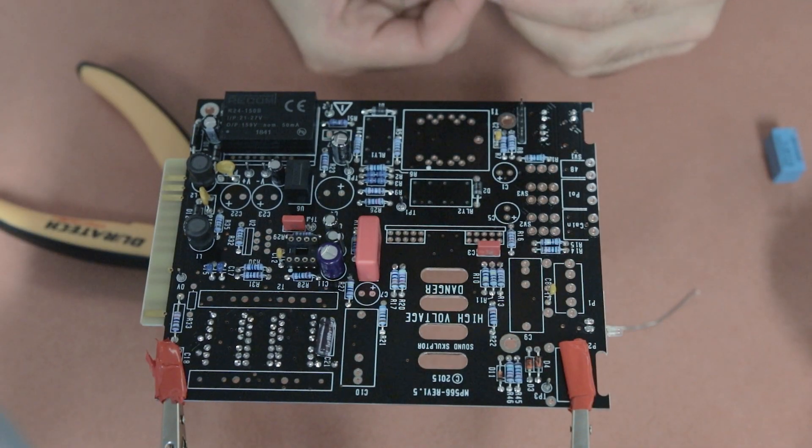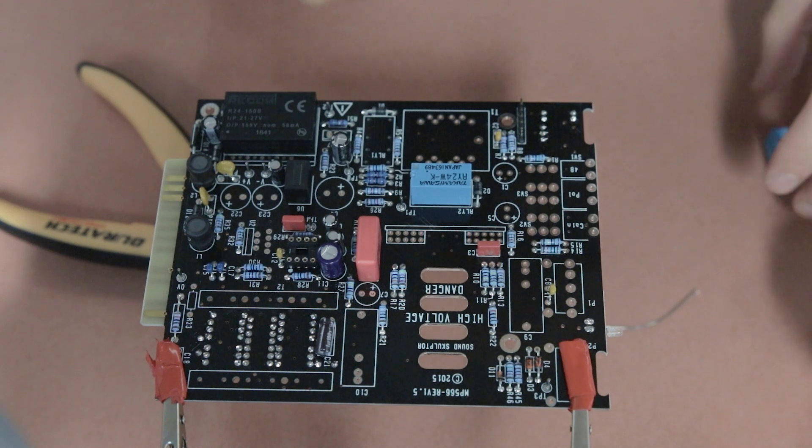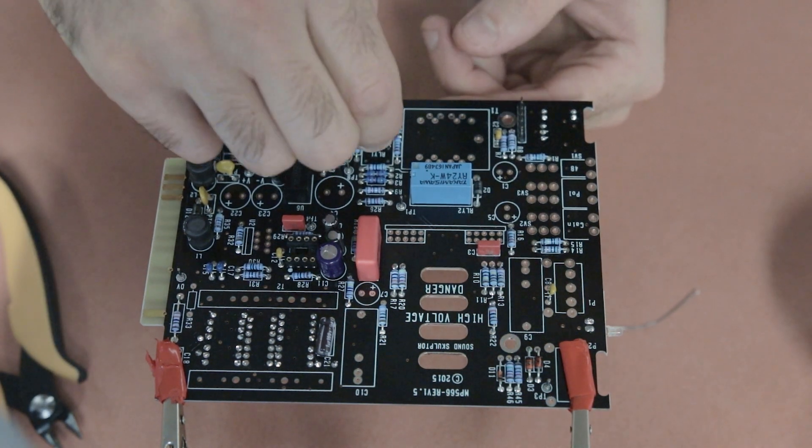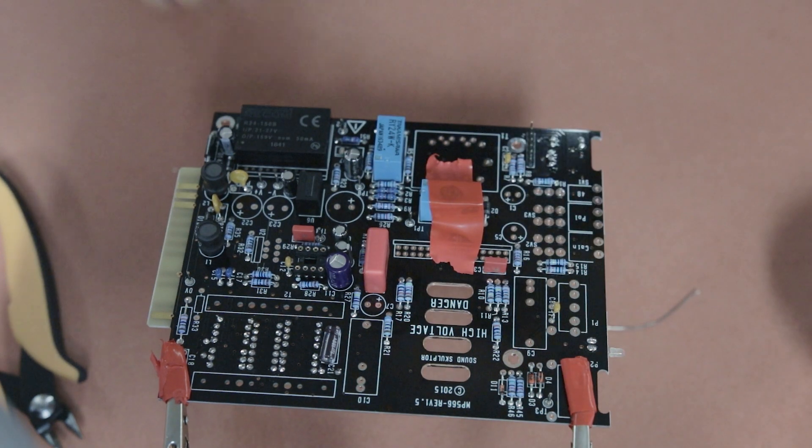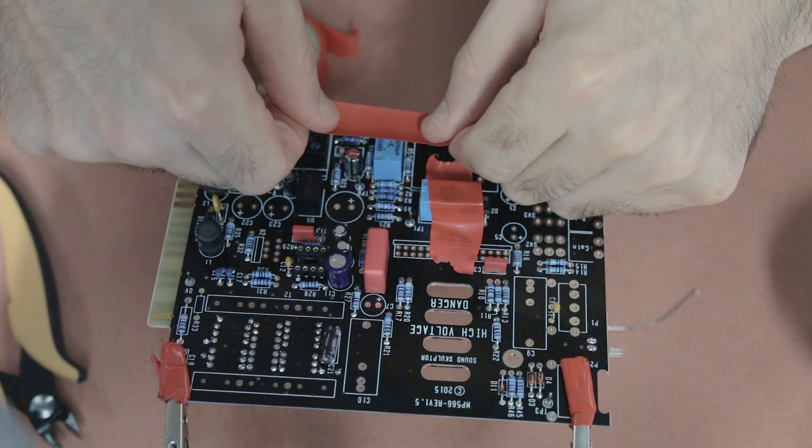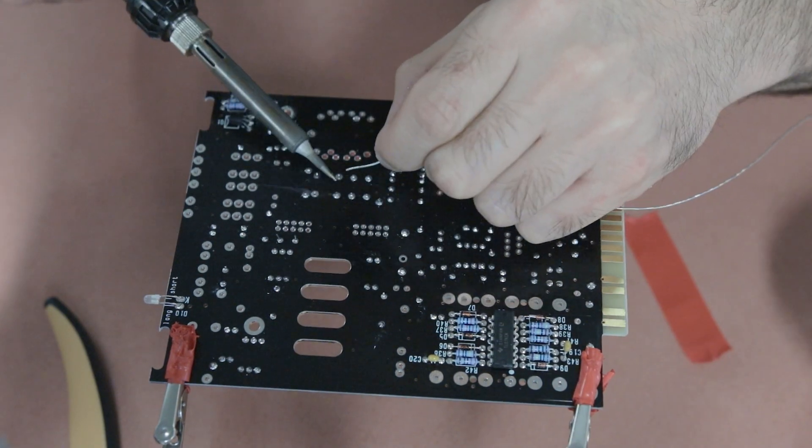These sets of relays they're pretty easy to get in the board they'll only fit in the board one way so you don't really have to worry about mucking it up just make sure they slot in nice and neat and then just use some tape to hold them in place flip the board solder them give the legs a snip you'll be good to go.